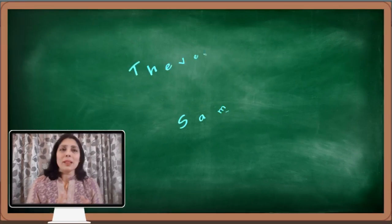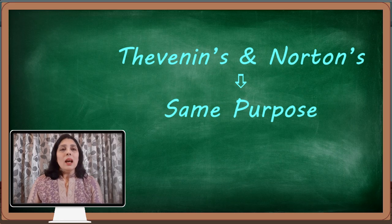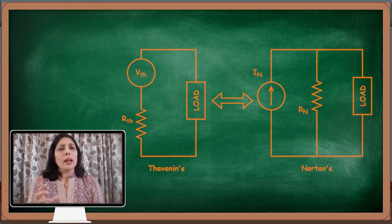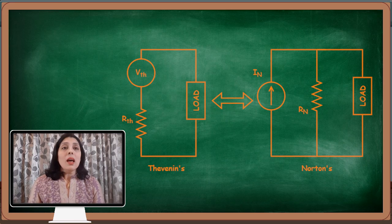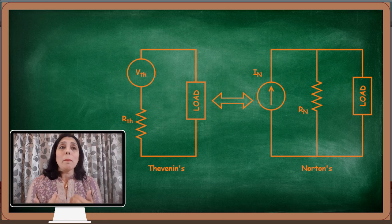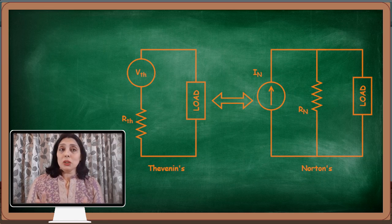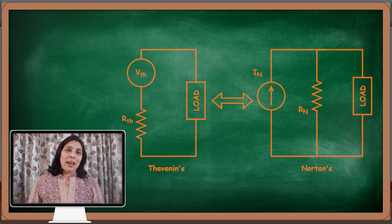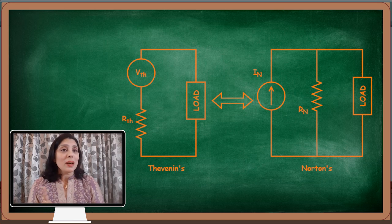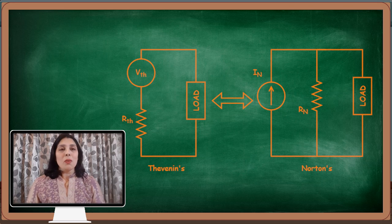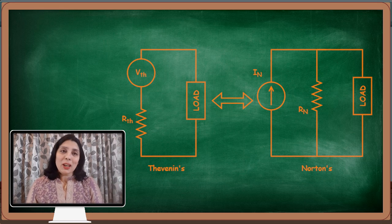Now I would like to conclude one important point: Thevenin's equivalent circuit and Norton's equivalent circuit both have the same purpose. One is converting the entire circuit into a voltage source with a series resistance; the other converts it to a current source with a parallel resistance. Both these equivalent circuits are dual of each other. So depending on the nature of analysis you have to do and the nature of the circuit, you will decide whether to convert your big circuit into a Thevenin's or Norton's equivalent circuit. I hope this small concept will make things simpler in your life. Thank you and happy learning!